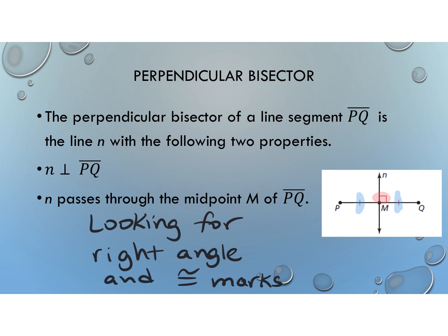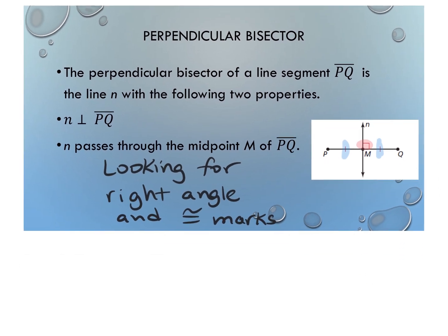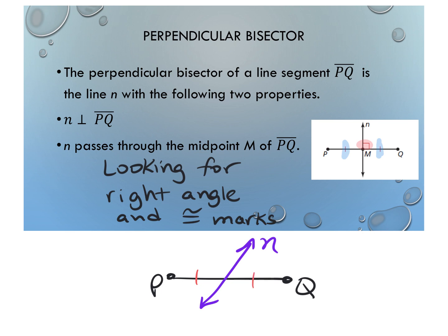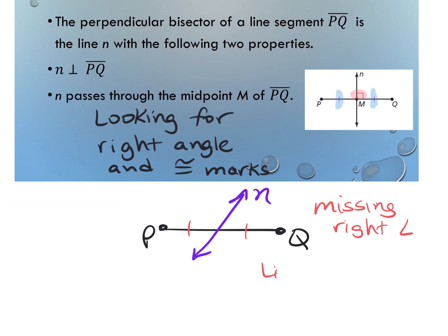If a line has the right angle and splits the segment into two congruent pieces, it's a perpendicular bisector. However, a line could bisect a segment — have congruency marks — but be missing the right angle. In that case, line N is just a bisector, not a perpendicular bisector. They both split the segment, but the perpendicular bisector also forms right angles.